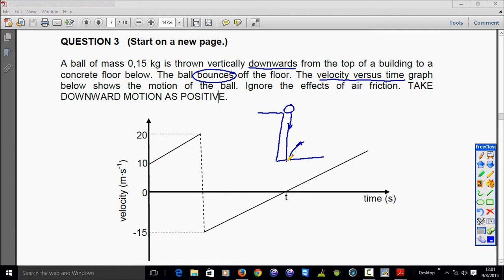Then they also tell us that downward is going to be taken as positive. So you will see that the velocity at the top of my graph is in the positive direction which will now indicate the downward motion. So let us see now what questions we are asked about this graph.